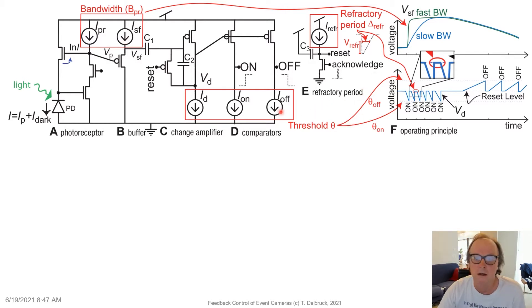Likewise, when we control the bias currents into the change amplifier or the comparators, especially the ratio of the bias currents, we can control the event threshold. So we control how much brightness change, log intensity change it takes to make events.